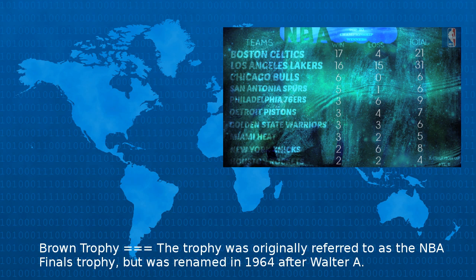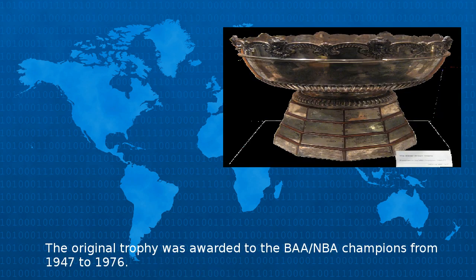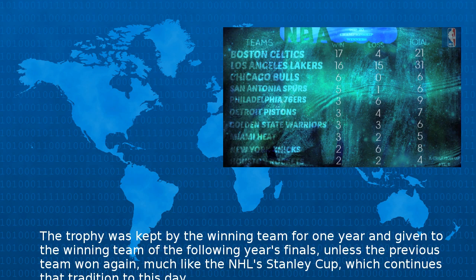The trophy was originally referred to as the NBA Finals Trophy, but was renamed in 1964 after Walter A. Brown, the original owner of the Boston Celtics, who was instrumental in merging the BAA and the National Basketball League into the NBA in 1949. The original trophy was awarded to the BAA and NBA champions from 1947 to 1976. The trophy was kept by the winning team for one year and given to the following year's finals winner, unless the previous team won again — much like the NHL's Stanley Cup.